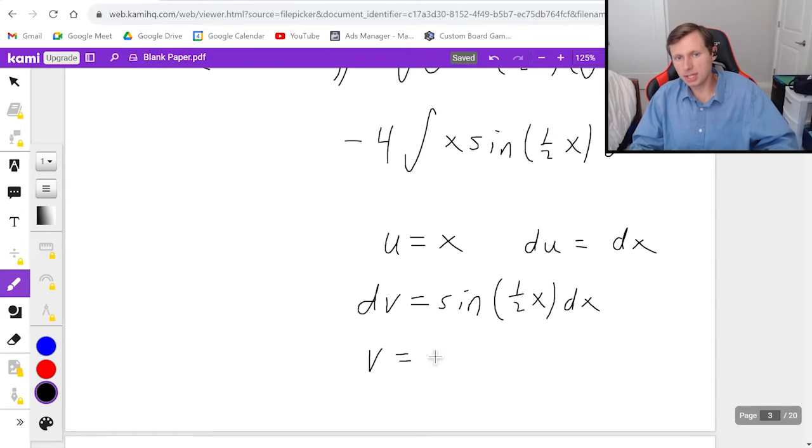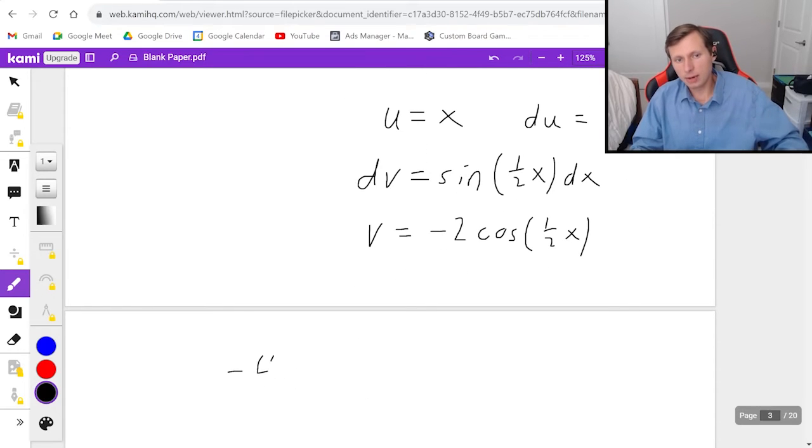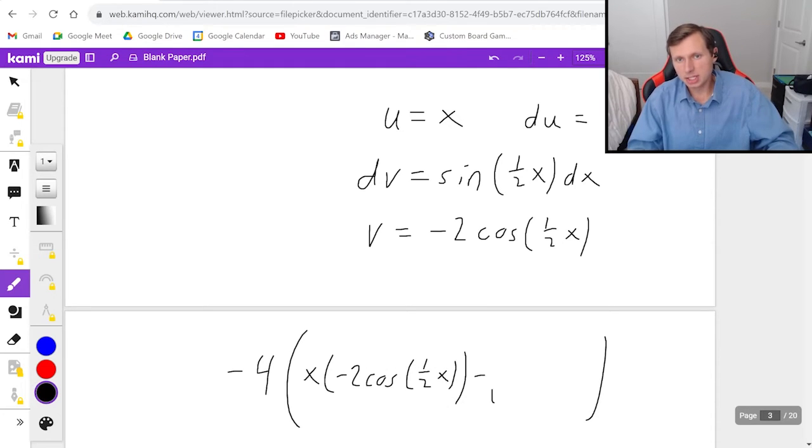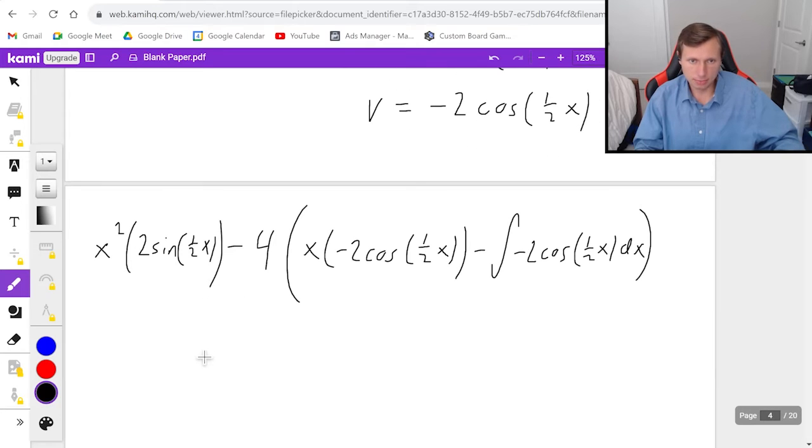And the integral of this will be, first the integral of sine is negative cosine of 1 half x. And then the 1 half, if I take care of that with a u substitution, will put a 2 out in front. So really it's negative 2 cosine. And now watch this when I put it together, because there's already this minus 4 out in front that I'm going to have to put out like this, and then everything else is going to go in parentheses. So it's going to be uv, so x times negative 2 cosine of 1 half x minus the integral of negative 2 cosine of 1 half x dx. And there we go. There's the correct integration by parts for that. I still have the x squared times 2 sine of 1 half x. That's still there out in front. I need to deal with that still.